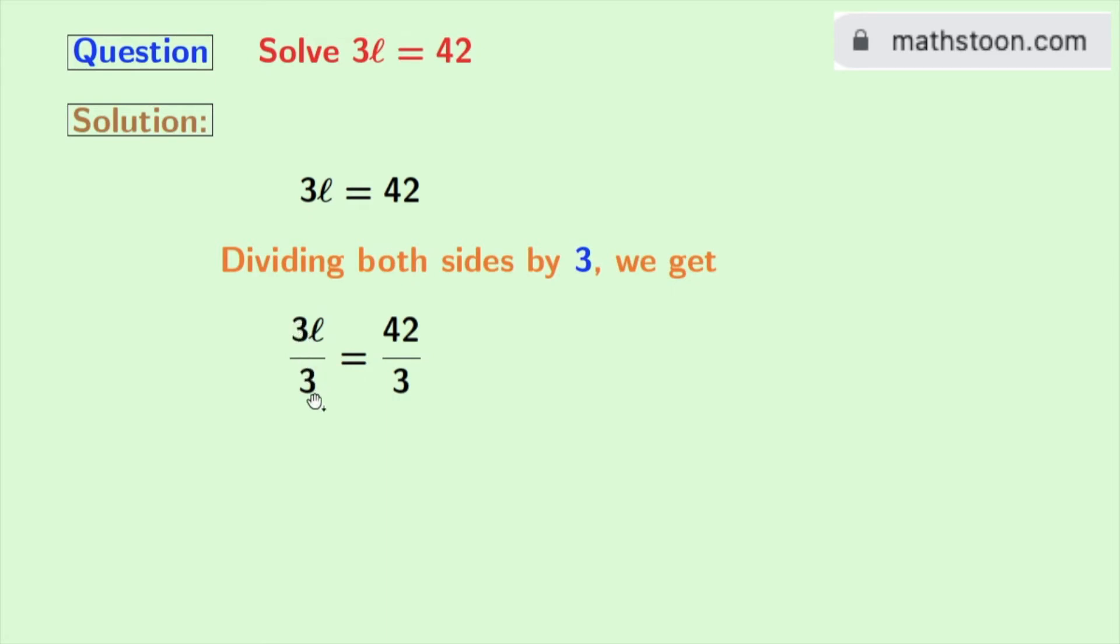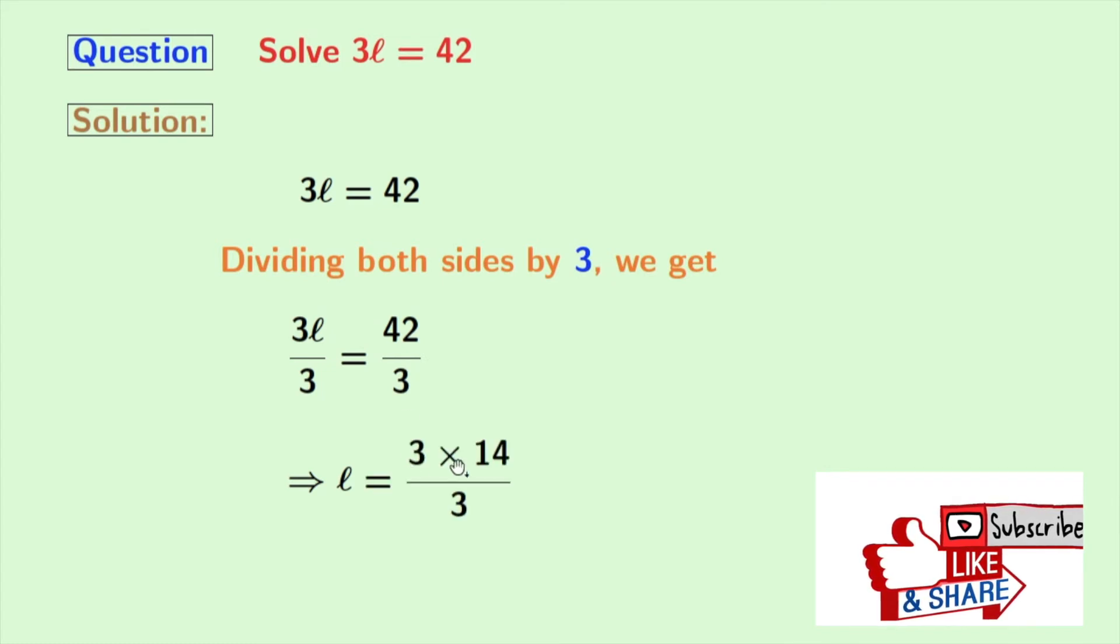Now in the left hand side, 3 gets cancelled and we are left with L. And in the right hand side, we will write 42 as 3 times 14, and 3 remains the same in the denominator.